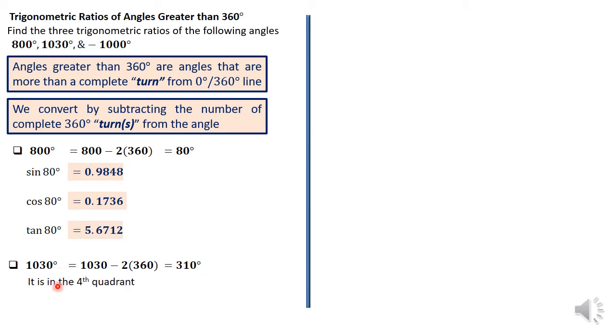Now, it is in the fourth quadrant. That should inform how we convert, and which trigonometric ratio will be positive. The conversion will be 360 minus 310, since in the fourth quadrant, we normally convert by having 360 minus the given angle, in our case, 310. Remember that only cosine is positive in this quadrant.